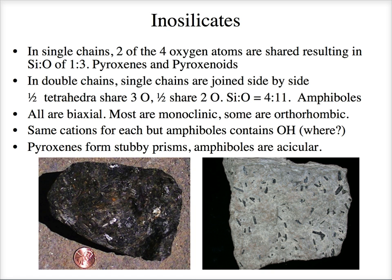Pyroxenes tend to form stubby little prisms. On the left you can see blocky grains inside a pyroxenite — an igneous rock composed of 90 percent or more pyroxene. A pyroxenite is another example of a peridotite, a mantle rock. The earlier rock I showed contained more olivine than pyroxene. There are peridotites called werlites, lherzolites, websterites — but that's all petrology.